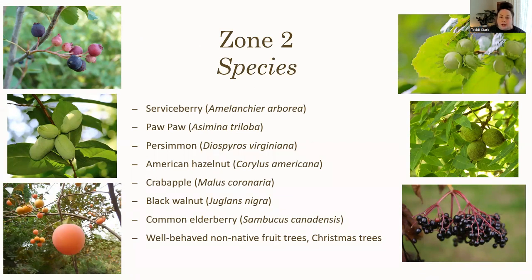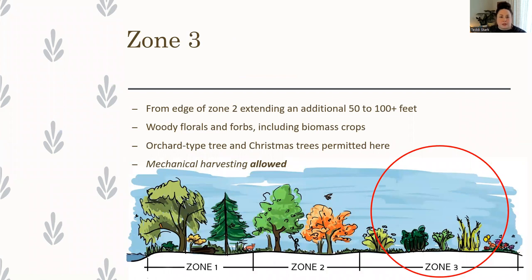For Christmas trees, we want to make sure we are only harvesting a couple of trees a year and then replanting those. Zone three is from the edge of zone two extending an additional 50 to 100 feet or more. Here we can plant things that we can mechanically harvest, including woody florals and forbs, biomass crops like willows, even switchgrass. Also orchard-type trees and Christmas trees are permitted here. Anything you would need to mechanically harvest, you want to reserve for zone three.